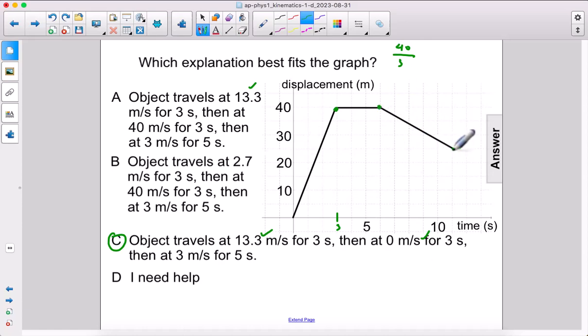We go from 15 to 40, so we have a rise of 15, and we have time of five seconds. So we travel at three meters per second for five seconds. Yes, the answer is C.